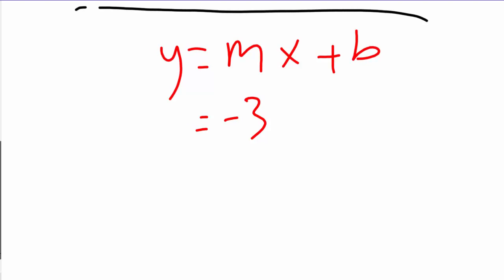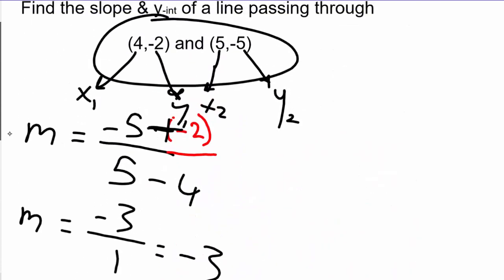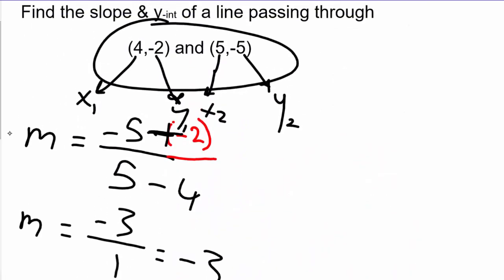For x and y, it doesn't matter which coordinate you choose - just pick one. I like to deal with small numbers, so I'm going to go with (4, -2). You can choose the other coordinate and you'll still get the same y-intercept. So y is -2 and x is 4.